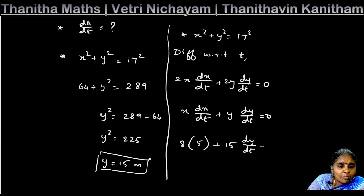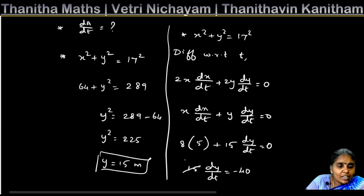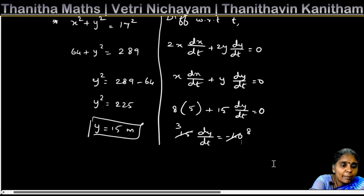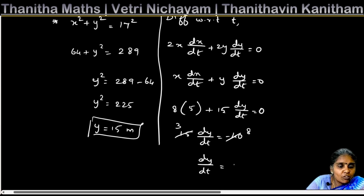Substituting the values: 8 × 5 = 40, so 40 + 15(dy/dt) = 0. Therefore 15(dy/dt) = −40, giving dy/dt = −8/3 meters per second. This is the answer to the first question.